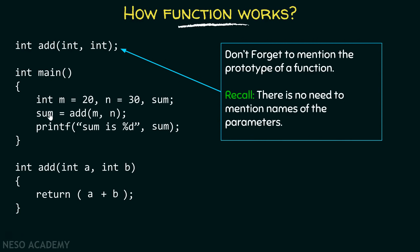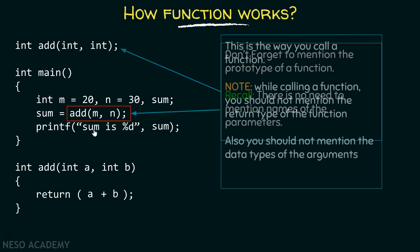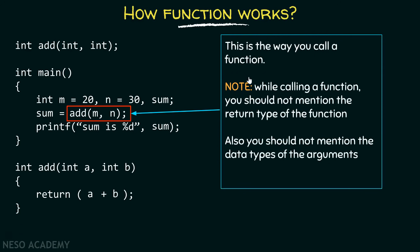In the next line we have sum equals to add(m, n). This is the way you call a function. While calling a function, you should not mention the return type of the function, and you should also not mention the data types of the arguments. You should only mention the names of the arguments. This is very important to note when you are calling a function.